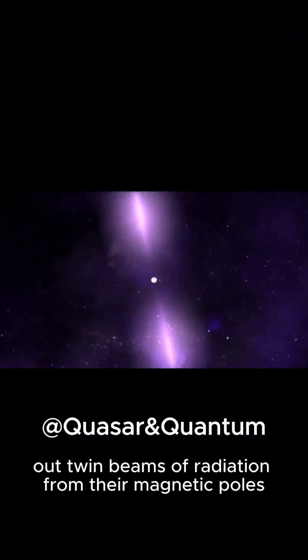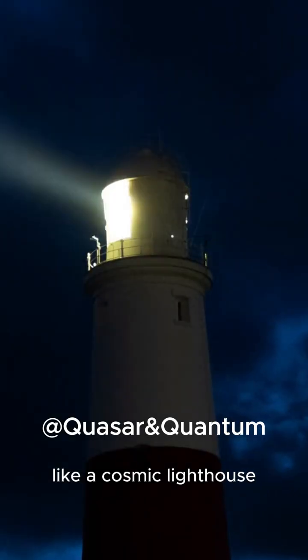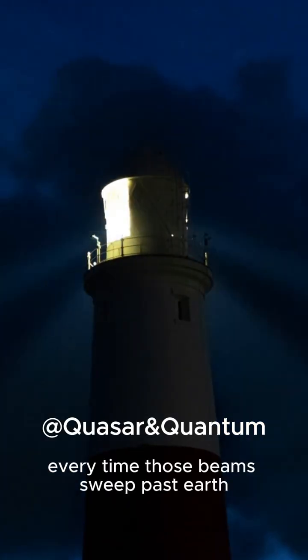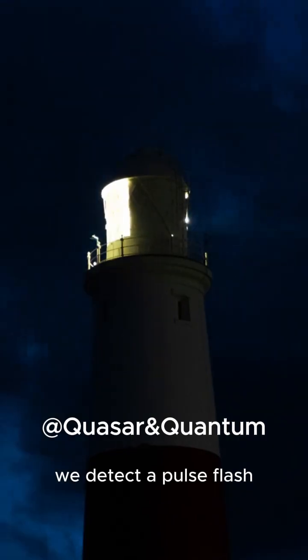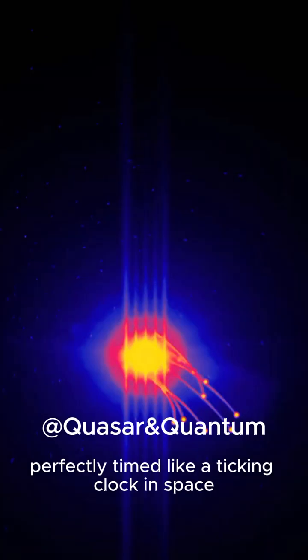Pulsars shoot out twin beams of radiation from their magnetic poles, like a cosmic lighthouse. Every time those beams sweep past Earth, we detect a pulse. Flash, flash, flash. Perfectly timed like a ticking clock in space.